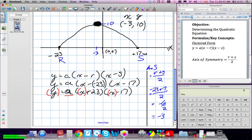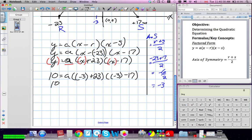So, our y is 10. So, we have 10 equals A. X is negative 3 plus 23. Negative 3 minus 17. 10 equals A. Negative 3 plus 23 is positive 20. Negative 3 minus 17 is negative 20.